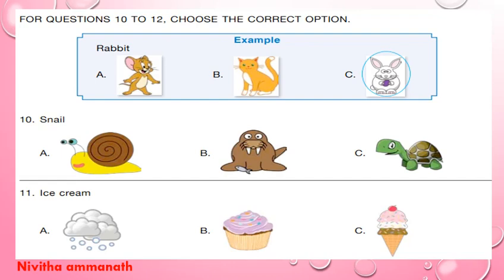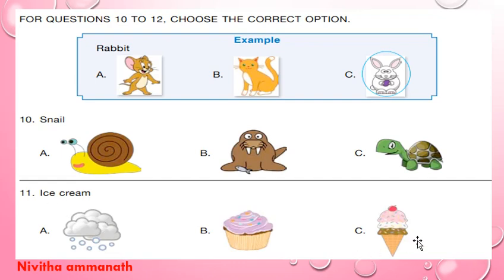For questions 10 to 12, choose the correct option. For example, rabbit — C is the correct option. Snail — snail is A, so A is the correct option. Ice cream — C is the correct option.